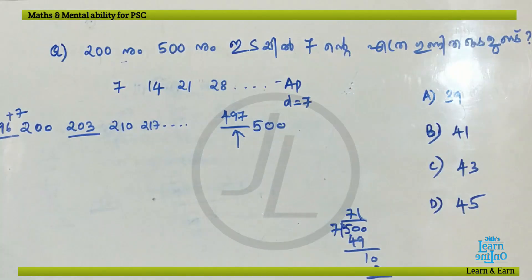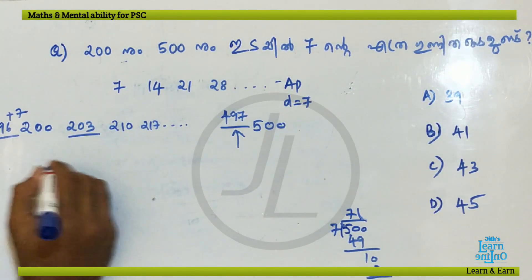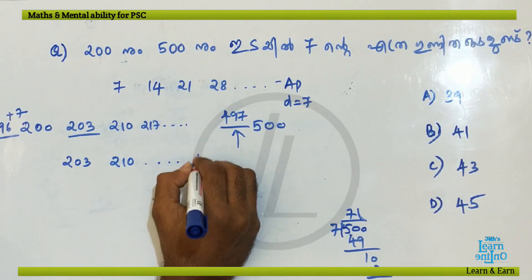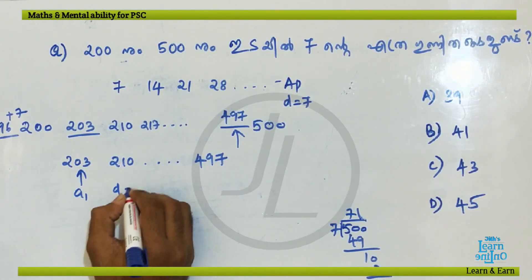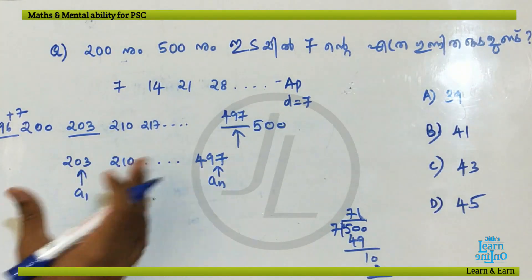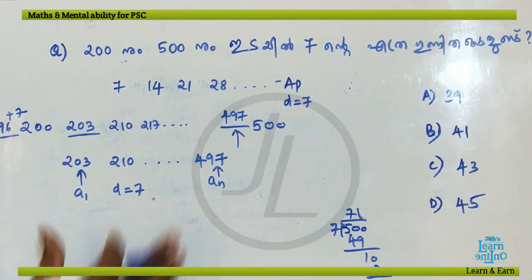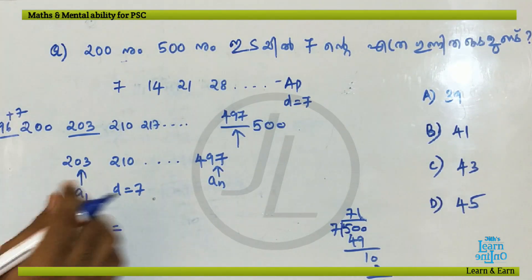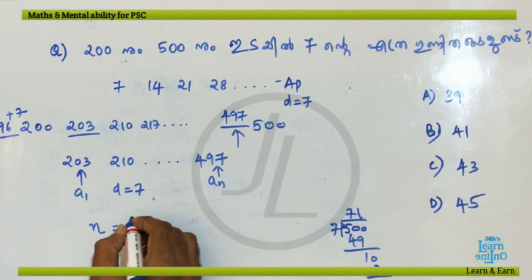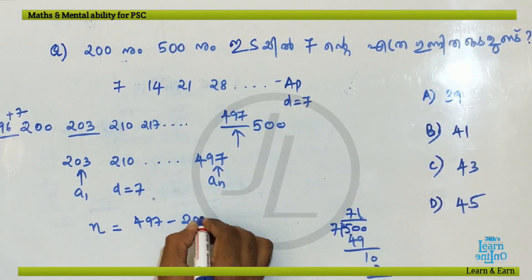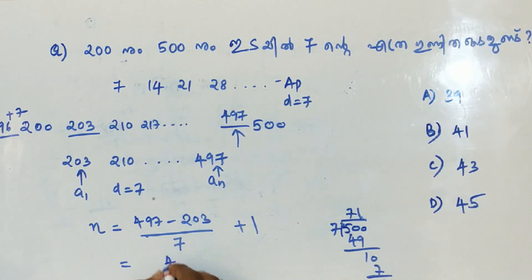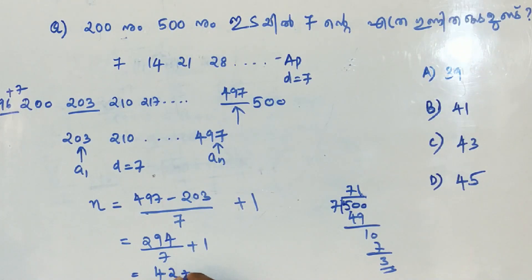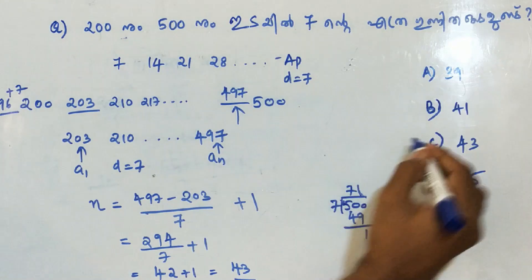So this is 7. If we use AP: 203, 2010, 407, common difference is 7, last term is 497. So if we use N, with first term, last term, common difference: N equals last term minus first term divided by common difference, then plus 1. We use 497 minus 203 equals 294, divided by 7 equals 42, plus 1 equals 43. Option C, 43.